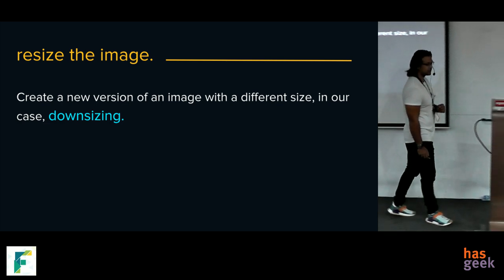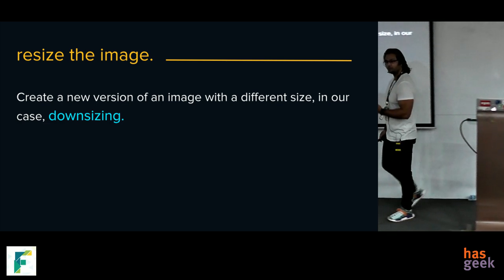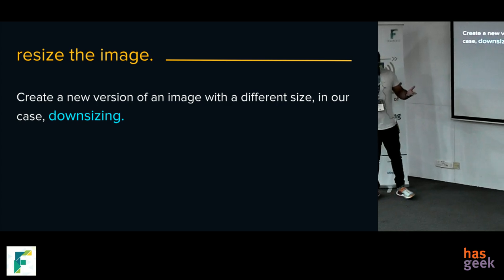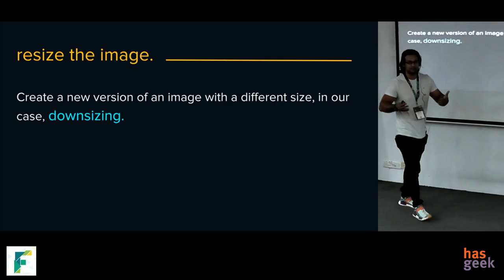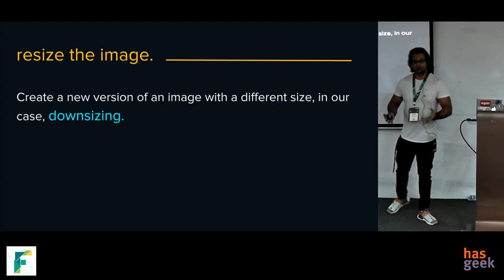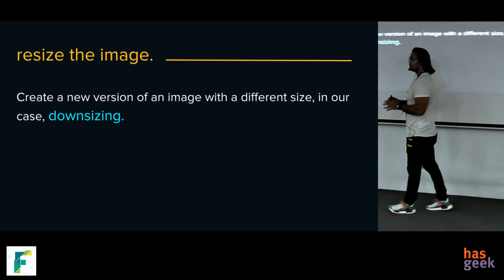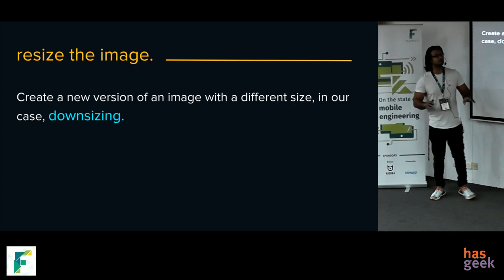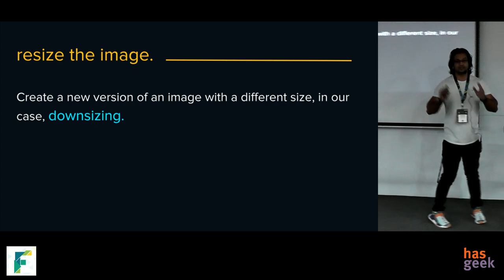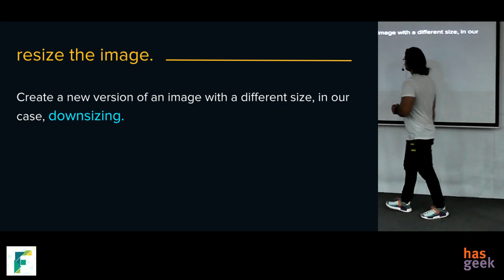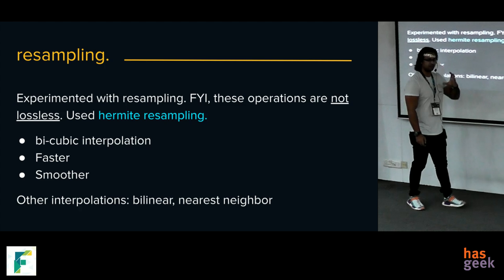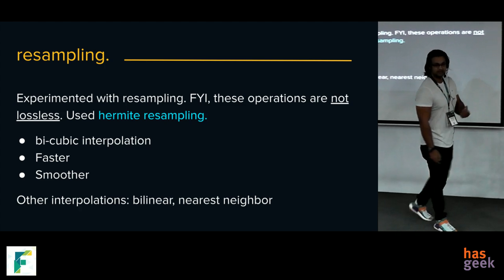The next problem was resizing images before uploading. You have an image of W by H and you want to resize it to a smaller size of A by B, without losing quality — not reducing the pixel count, but reducing the physical dimensions. This gave us a boost of around 30% to 35% reduction in file size just from resizing.